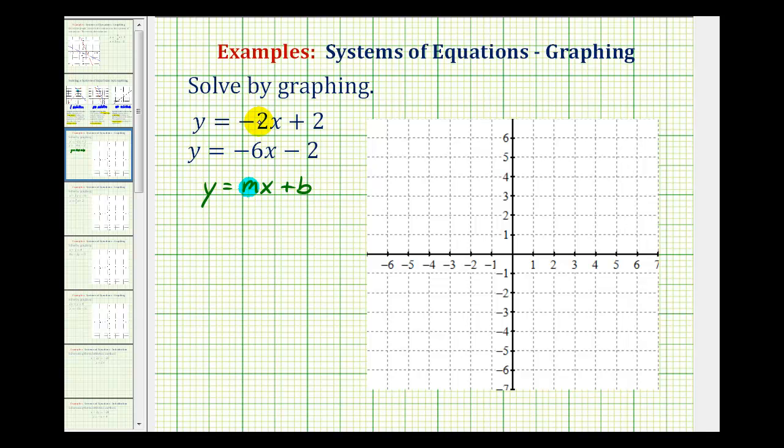So the first line has a slope of negative two. The second line has a slope of negative six. The first line has a Y-intercept of positive two. The second line has a Y-intercept of negative two. And we can use this information to graph our lines.